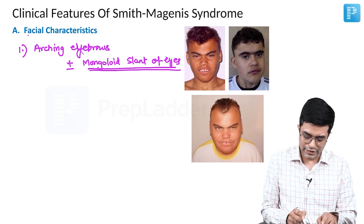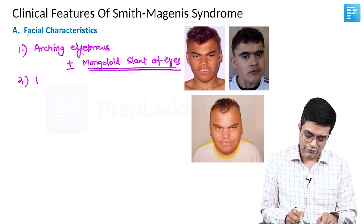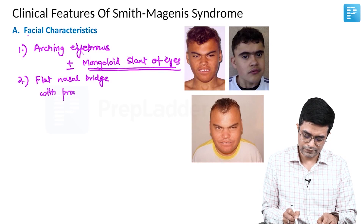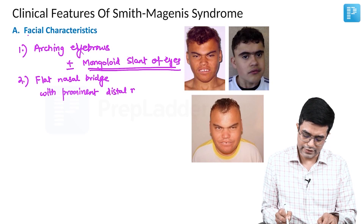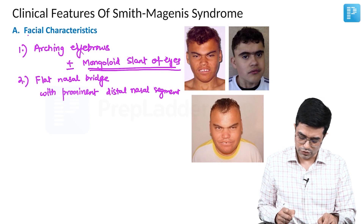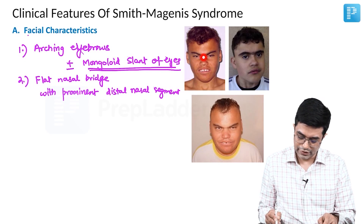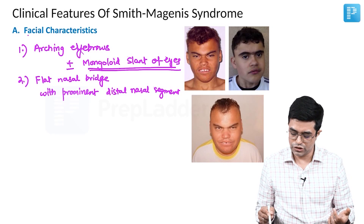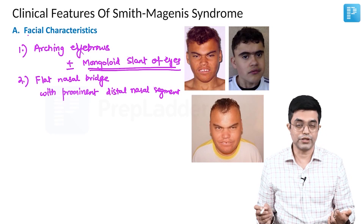Secondly, these patients may have a flat nasal bridge with a prominent distal nasal segment. As you can see in these children, the columella and the alae nasi part is very prominent despite the flat nasal bridge. This is true for the child shown, and the same is true for the adolescent as well.